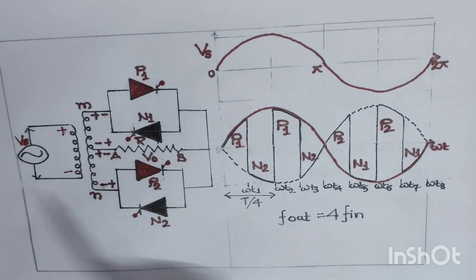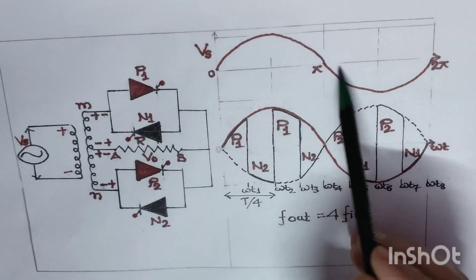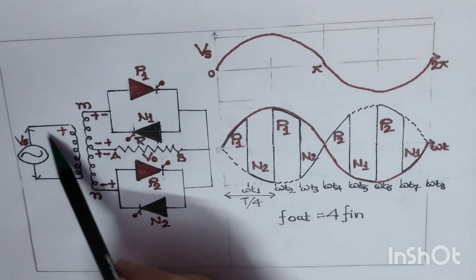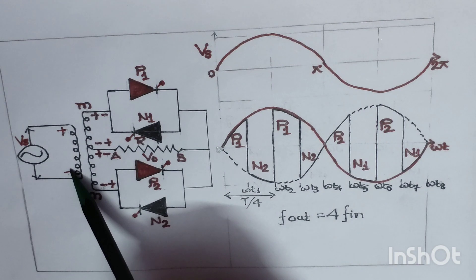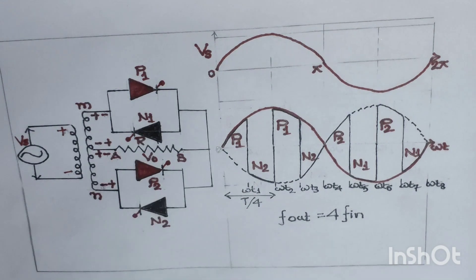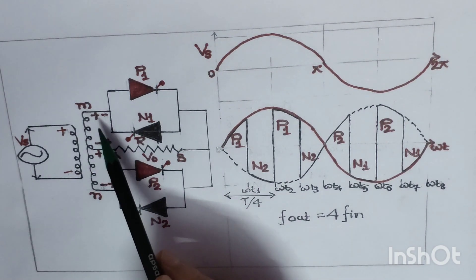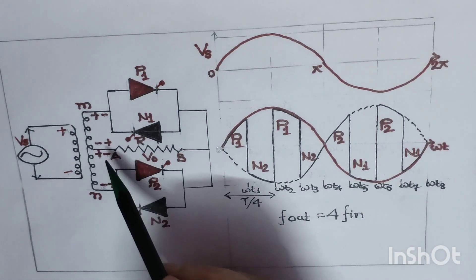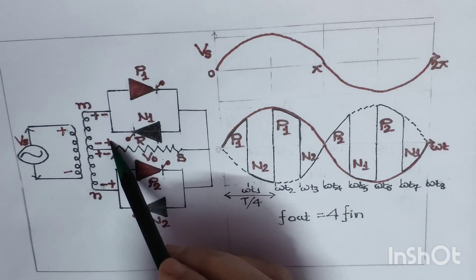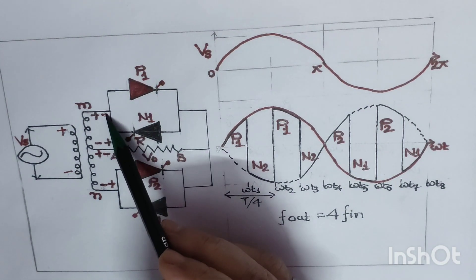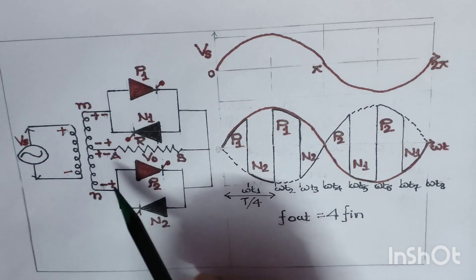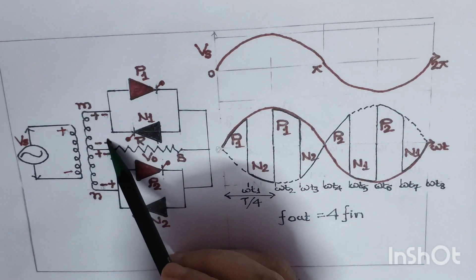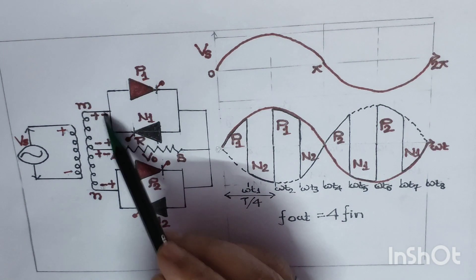Now we trace the operation when the input supply has a negative voltage. With negative supply, this side becomes positive and the other side negative. Across the secondary, one terminal has positive and the other has negative polarity. Again, one secondary terminal is more positive compared to the midpoint, and the other terminal is also more positive compared to the midpoint.